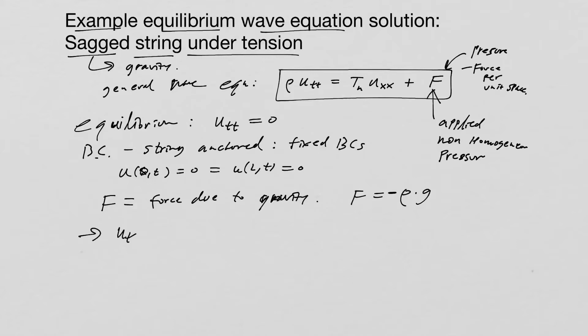So again, after we take u_tt is equal to zero, what we get is zero is equal to T_h·u_xx plus, but we're not going to do plus, we're going to do minus ρg.